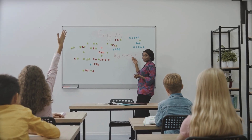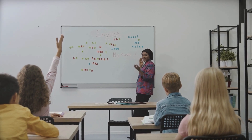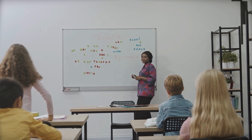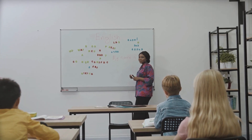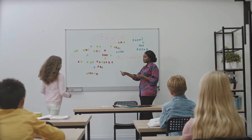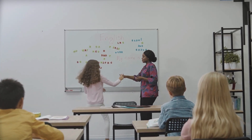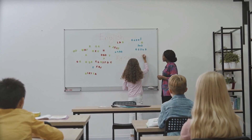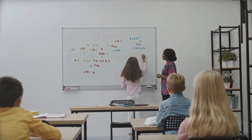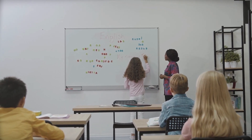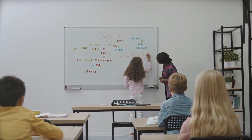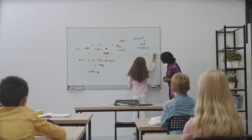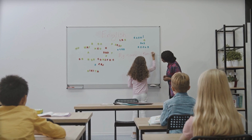Hello friends! Today my topic is sight words for kids. So what are sight words? Sight words are common words that schools expect kids to recognize instantly. Words like 'that,' 'it,' and 'is' appear so often that beginning readers reach the point where they no longer need to try to sound out these words. Let's start the video.